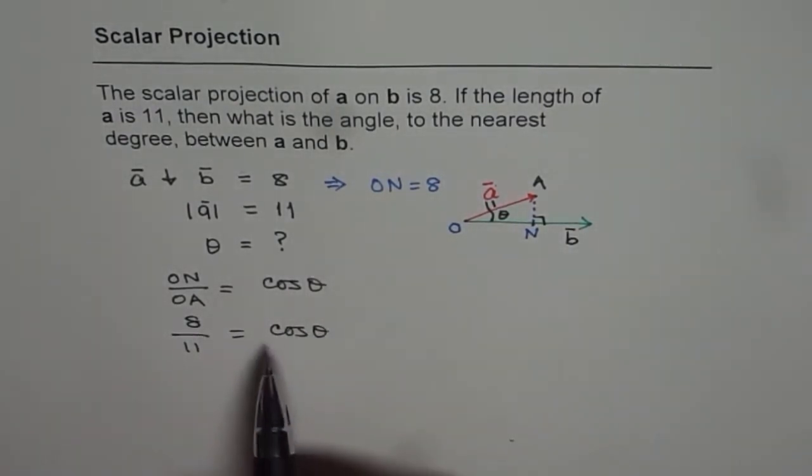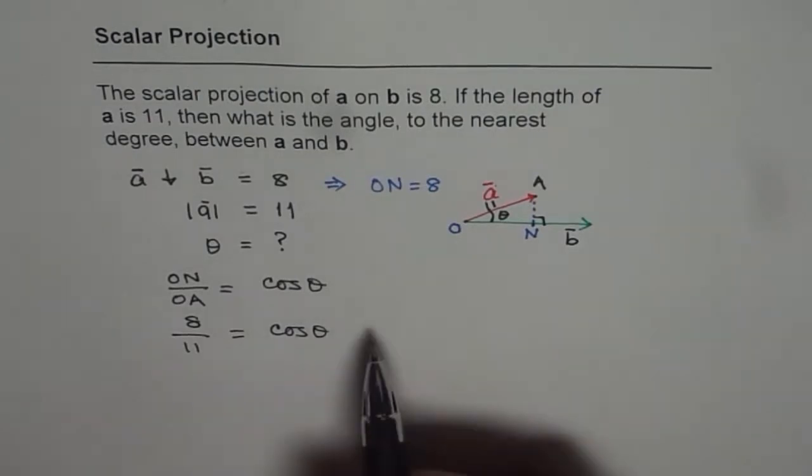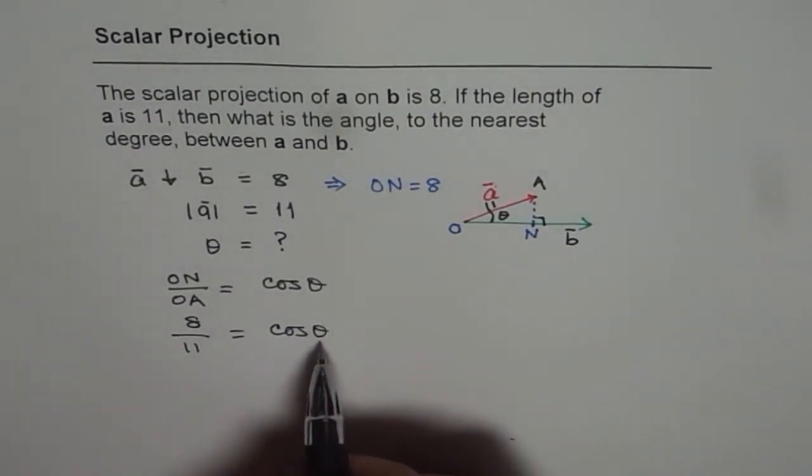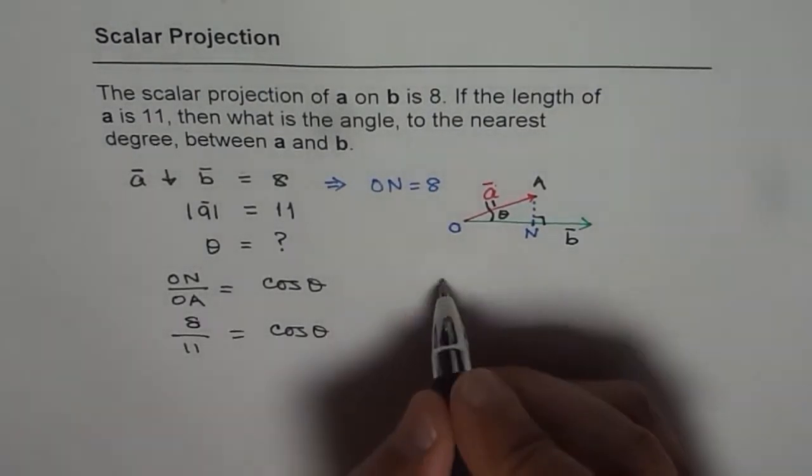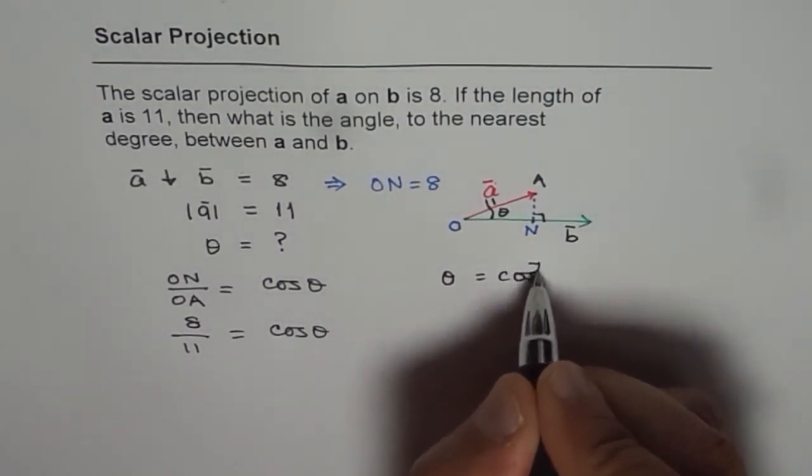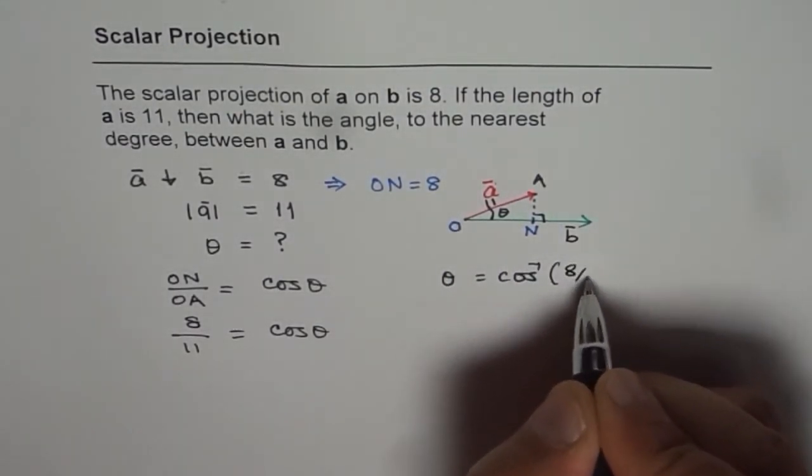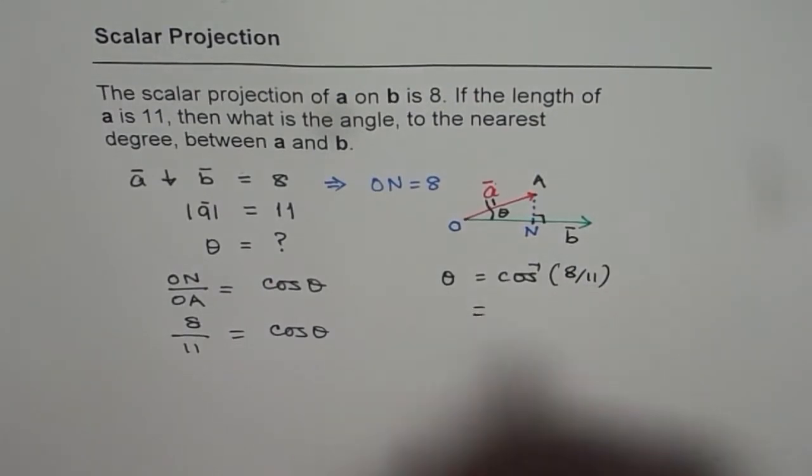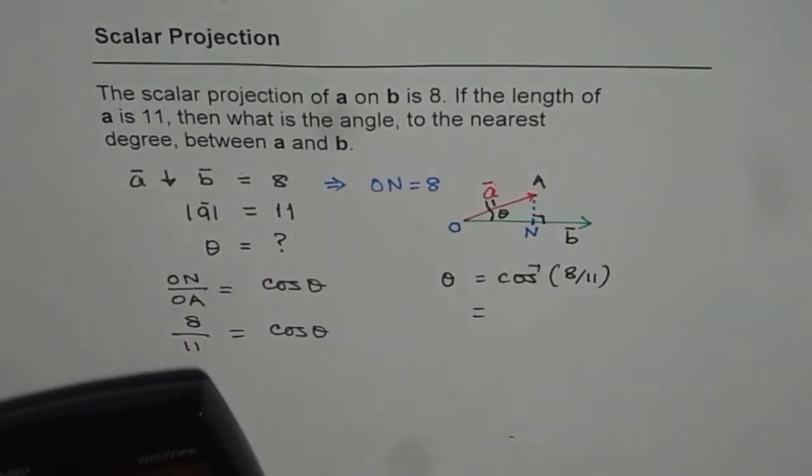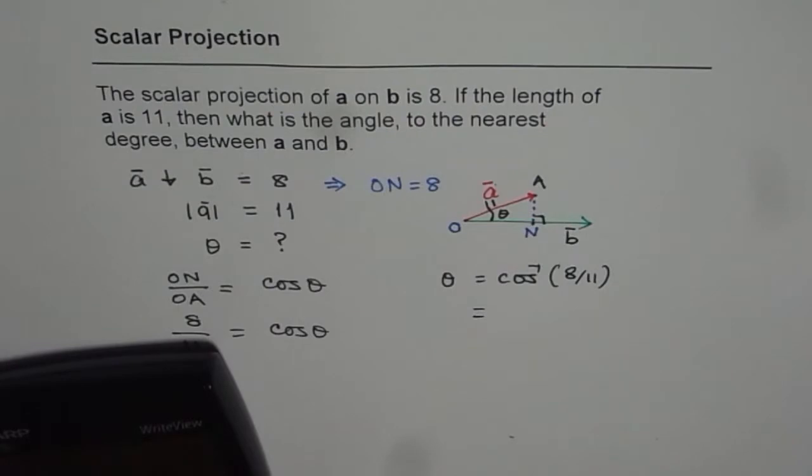Now from here we can find what theta is. So theta is equal to cos inverse of 8 over 11. So let us use calculator and figure it out. So it is second function cos inverse within brackets 8 divided by 11 bracket close equals to 43.34.